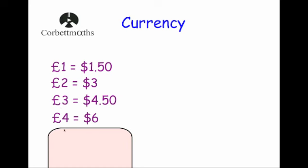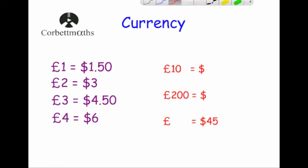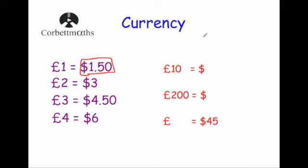When you want to change larger amounts of pounds into dollars, you wouldn't want to keep carrying on this list — you want a quick way to do it. If I wanted to change ten pounds into dollars, I'd notice that I'd have ten lots of $1.50, so I'm going to times ten by 1.5. Ten times 1.5 gives us fifteen, so I get fifteen dollars.